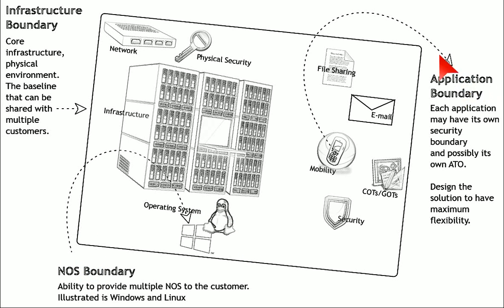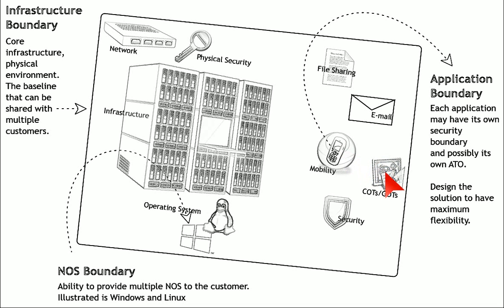Then we have an application boundary. An application boundary would include multiple applications — you might have file sharing or email, mobility services like an MDM or a security platform, COTS and GOTS applications — commercial off-the-shelf or government off-the-shelf applications. Could be email, another form of file sharing, a database or a CRM — whatever it is.